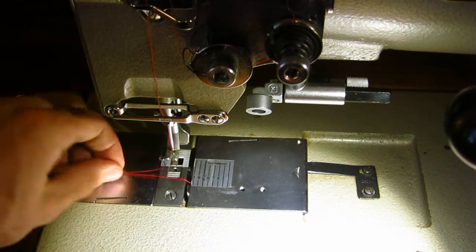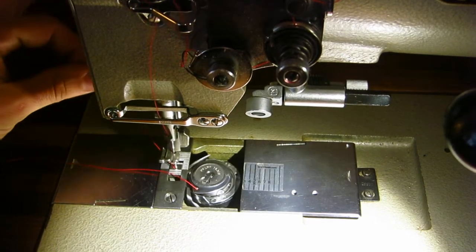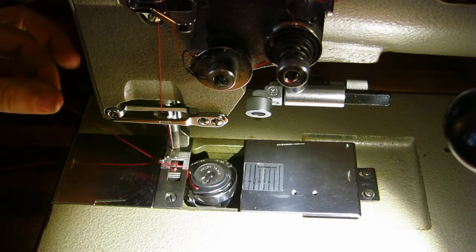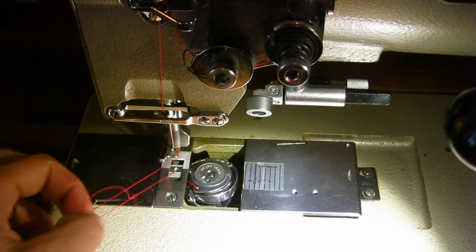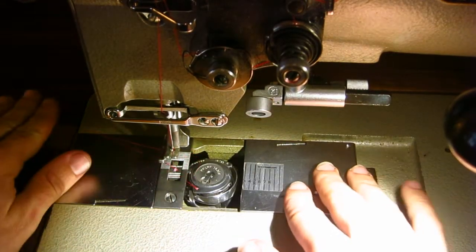And then you raise up the presser foot. And you'll see the hook catch. So then you hold the tail, do one revolution, and it will catch. And you'll see it, and then just pull it up. And you'll have both ready to go.